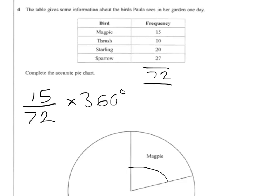Now 72 does actually go into 360 five times, but it doesn't really matter. If you've got a calculator, you can do 15 divided by 72 times 360, and you'll get an angle of 75 degrees.